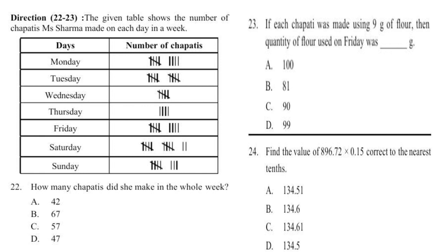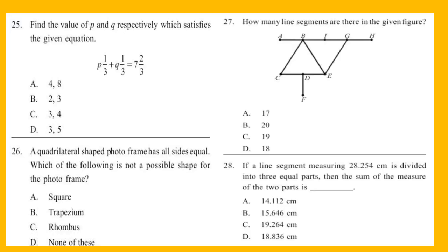Question 24: Find the value of 896.772 × 0.15, correct to the nearest tenth. Question 25: Find the value of p and q respectively which satisfies the given equation. Look at the equation.